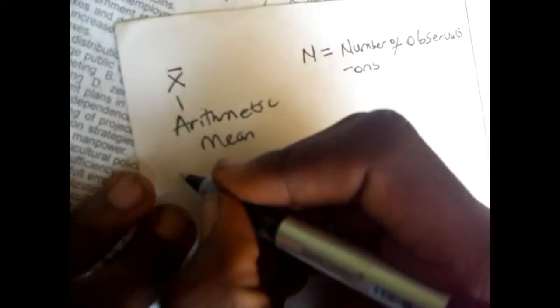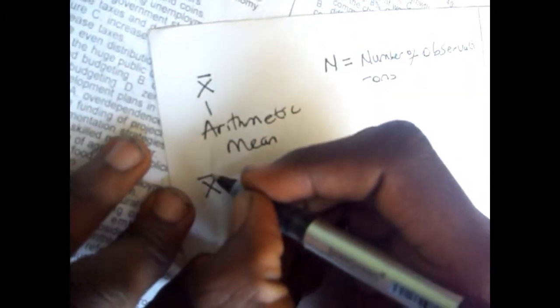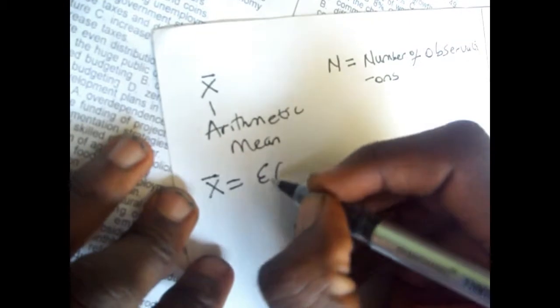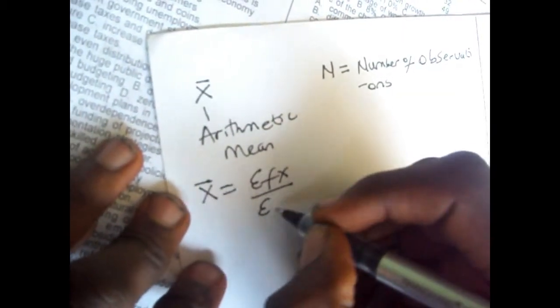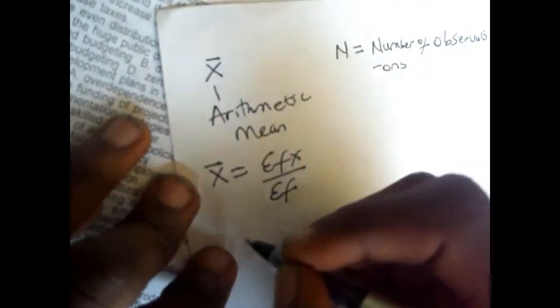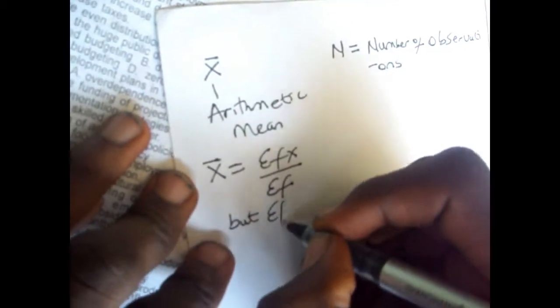The formula for x̄, the arithmetic mean, equals Σfx over Σf. But Σf is the same as n.